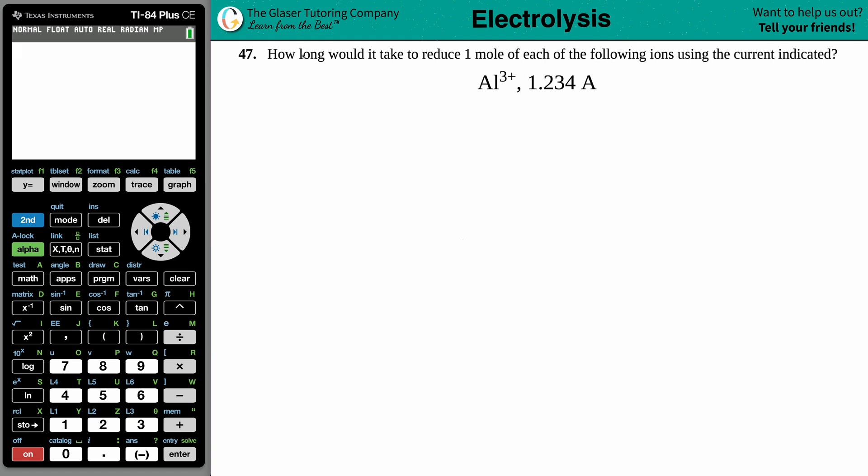Number 47, how long would it take to reduce one mole of each of the following ions using the current indicated? And then we have this example where we have aluminum ion, which is Al³⁺, and then we have a current of 1.234 amps.